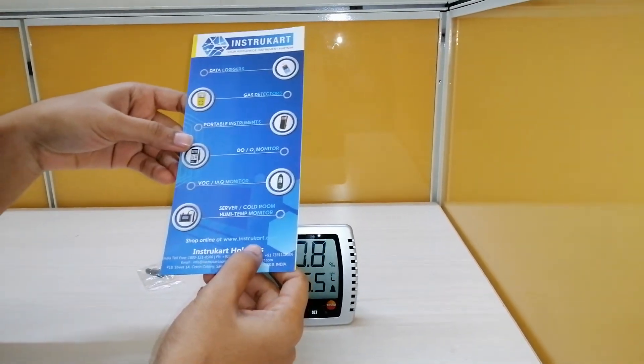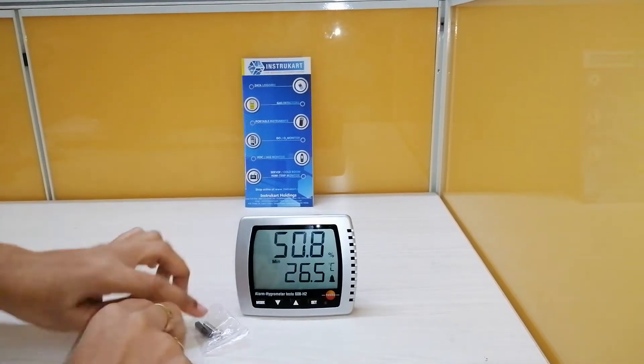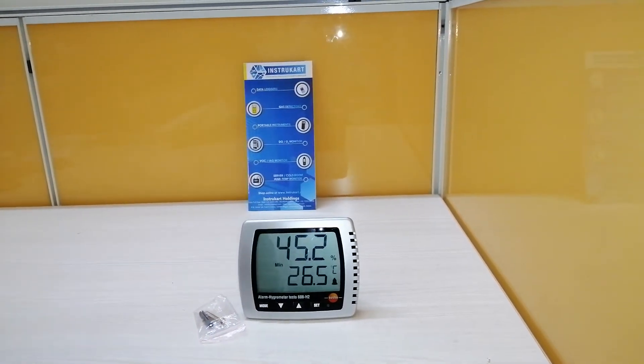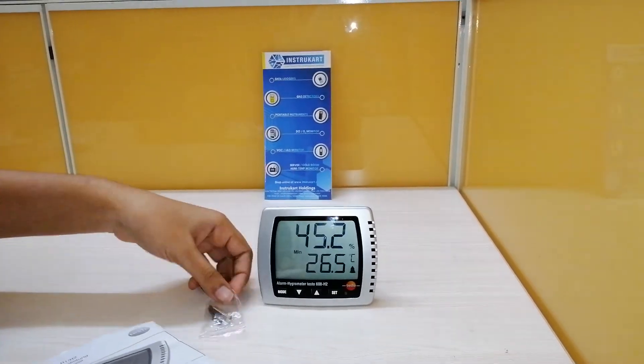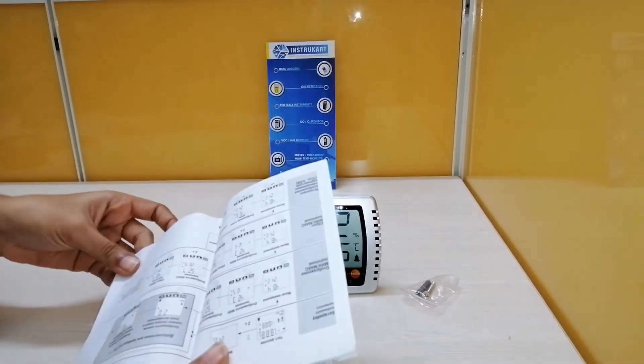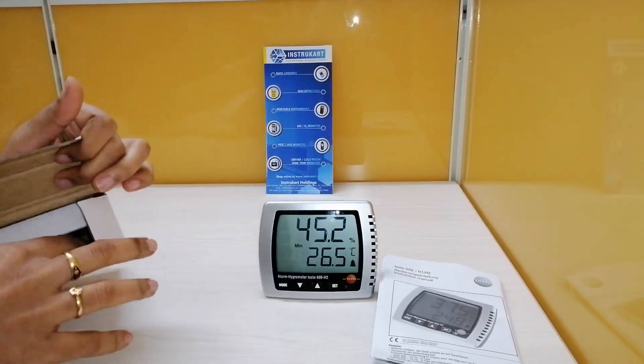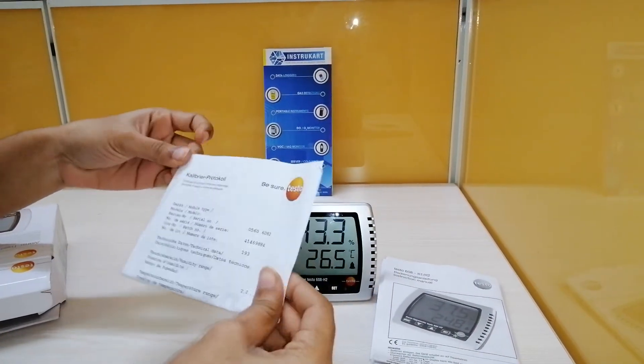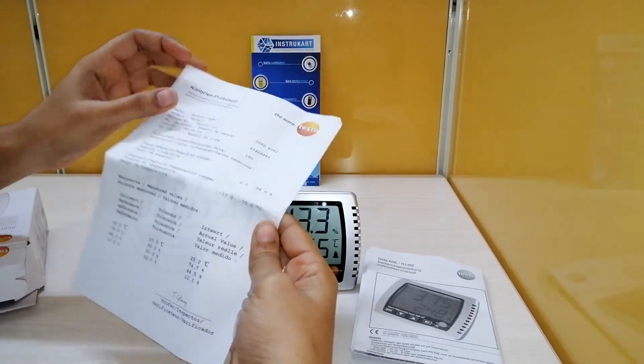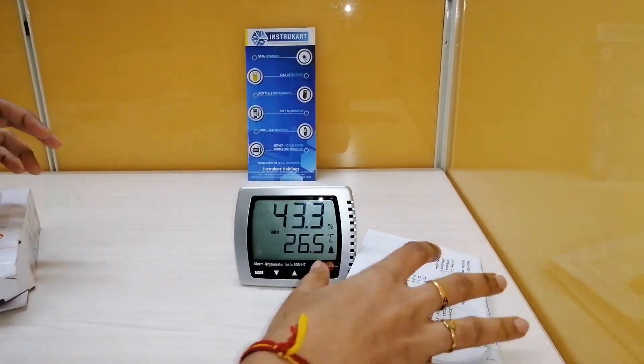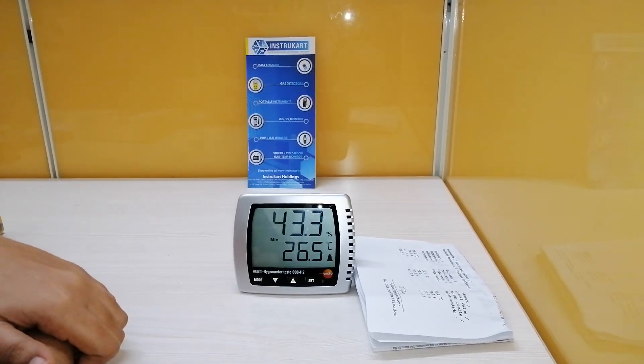And here are the accessories. You will get with this instrument: a screw for wall mounting and an instruction manual. You also get a calibration certificate, yes here is the calibration certificate for this thermo hygrometer. These are the accessories you will get on purchase of this instrument. Thanks for watching.